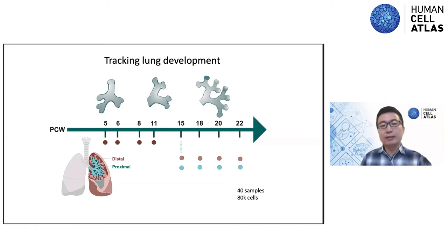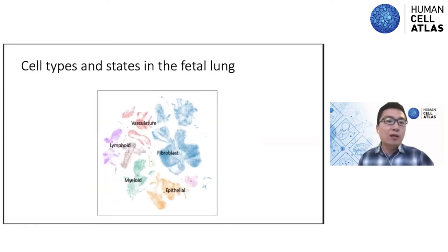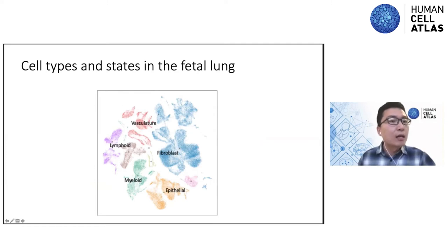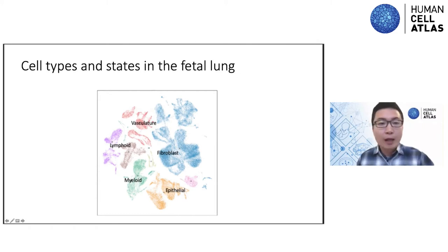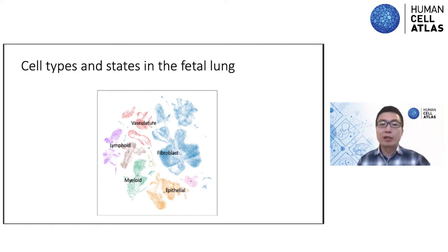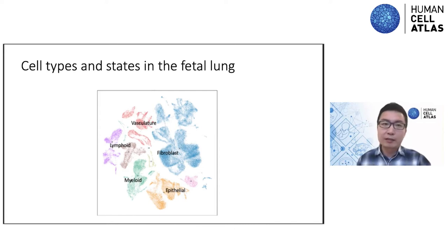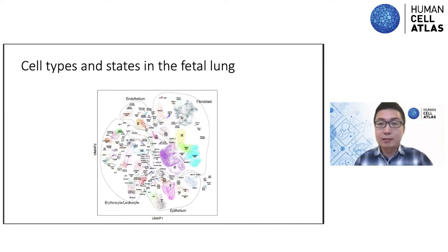We also separated the distal and proximal regions for higher resolution. Based on the data analysis, we can see most of the compartments expected in the fetal lung: vasculature, fibroblasts, stromal cells, and immune cells. By zooming in with recursive clustering, we can altogether identify more than 140 cell types and cell states.